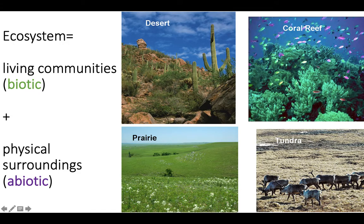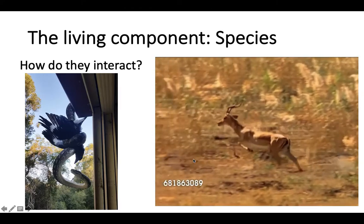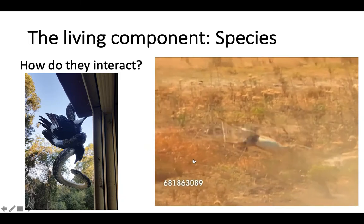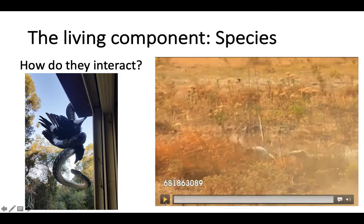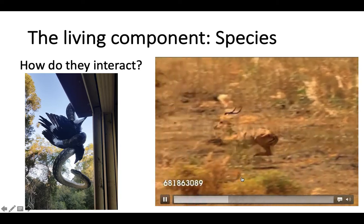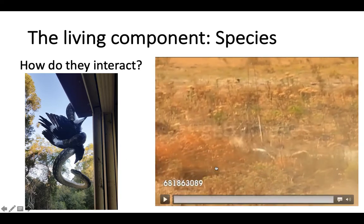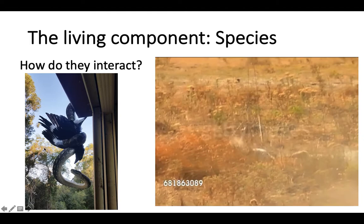Here are examples of some ecosystems you might be familiar with. So let's first talk about that living component — species — and mainly, how do they interact? This video and this picture of a boa constrictor eating a magpie demonstrate one of the most common forms of species interactions there is, and that is predation. But there are other forms too.